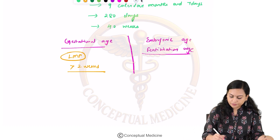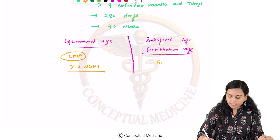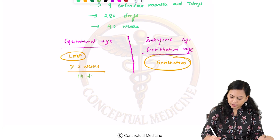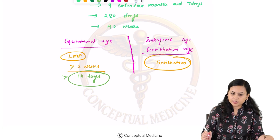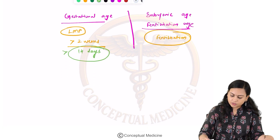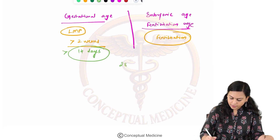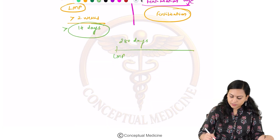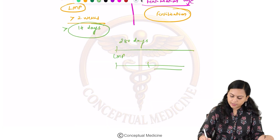Fertilization age is calculated from the date of fertilization only. So gestational age is 2 weeks or 14 days more than fertilization age. In other words, if 280 days is calculated from the date of LMP, then the embryonic or fetal age can also be taken as 266 days.